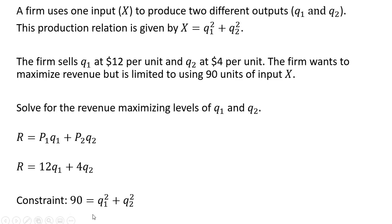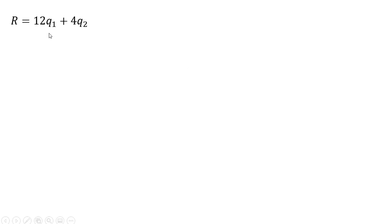And here's what our constraint looks like. We have 90 units of input x, which equals the output of good 1 squared plus the output of good 2 squared. Rewriting those key equations, I'm going to take this constraint now and solve it for the output of good 2. Moving some things around and now taking the square root of both sides leaves us with this expression.